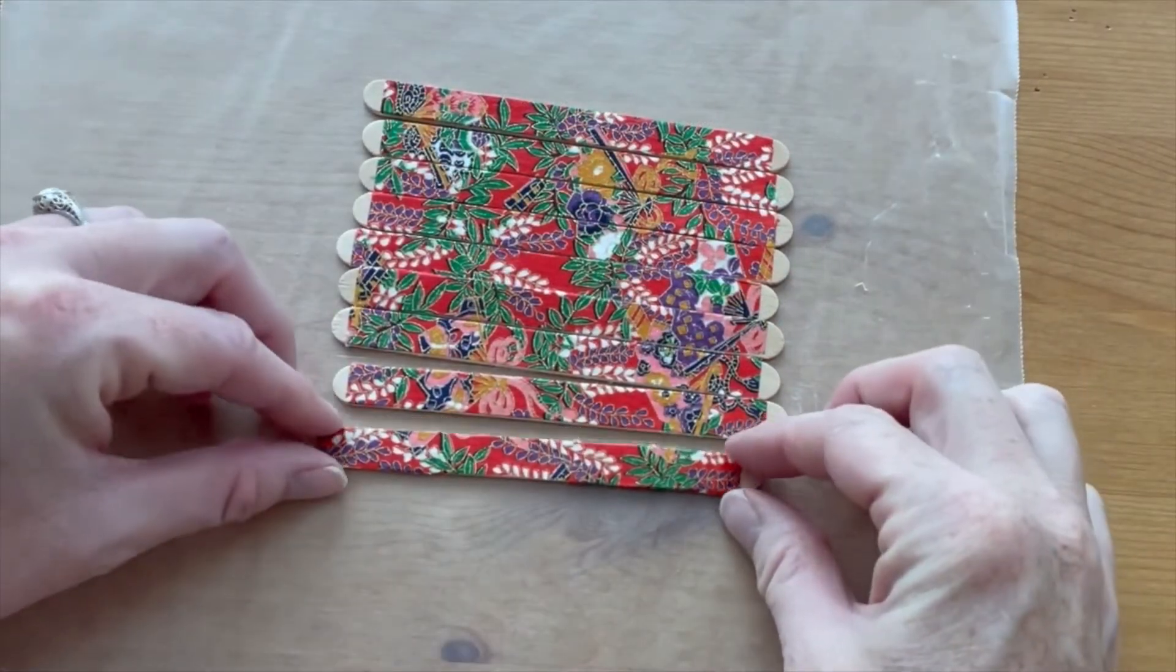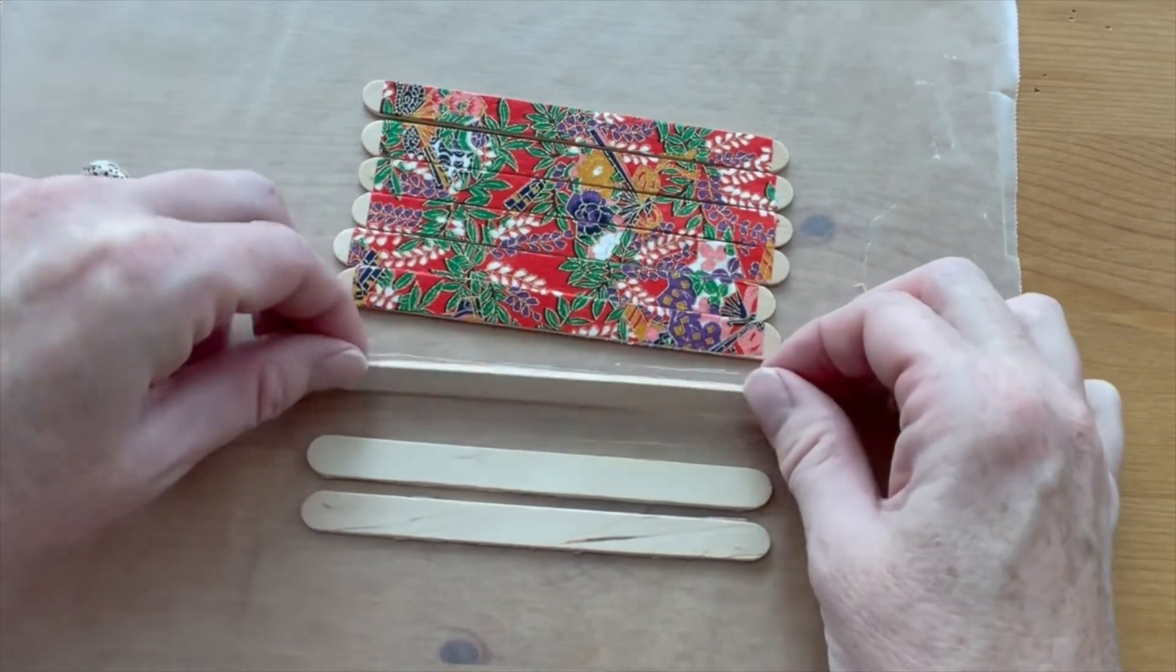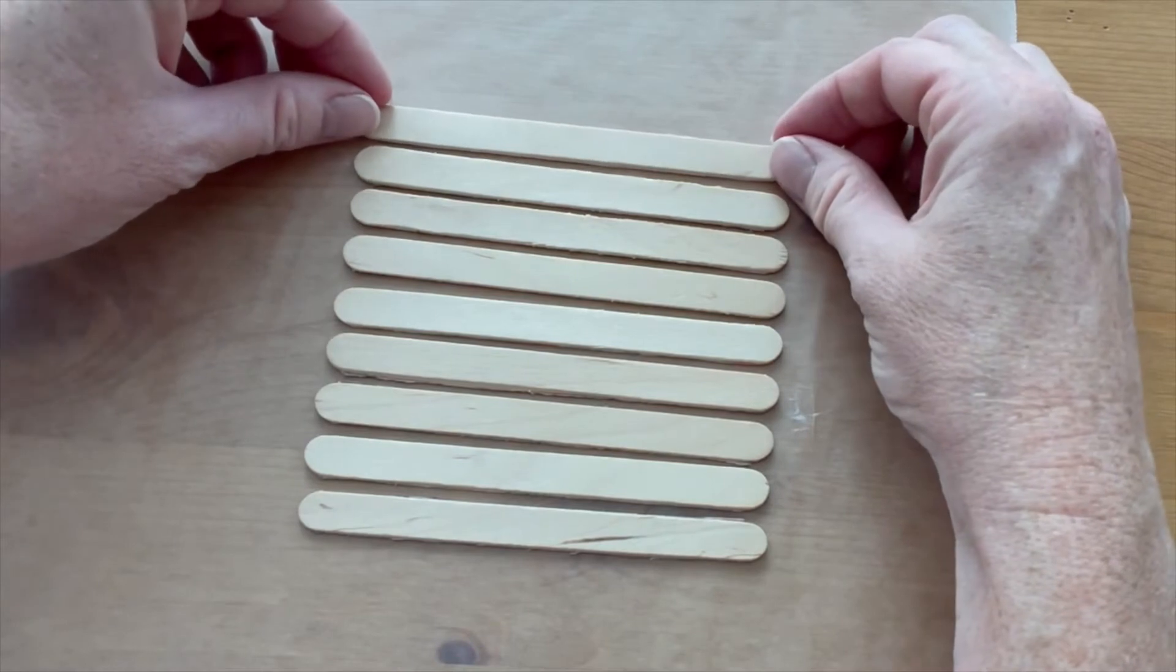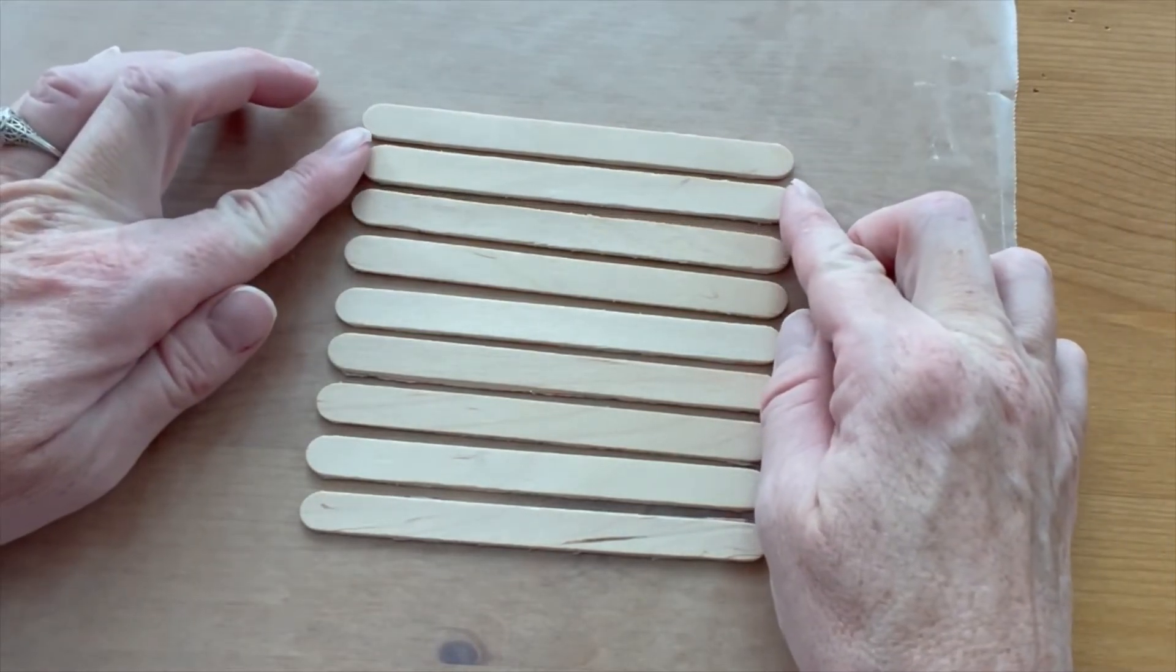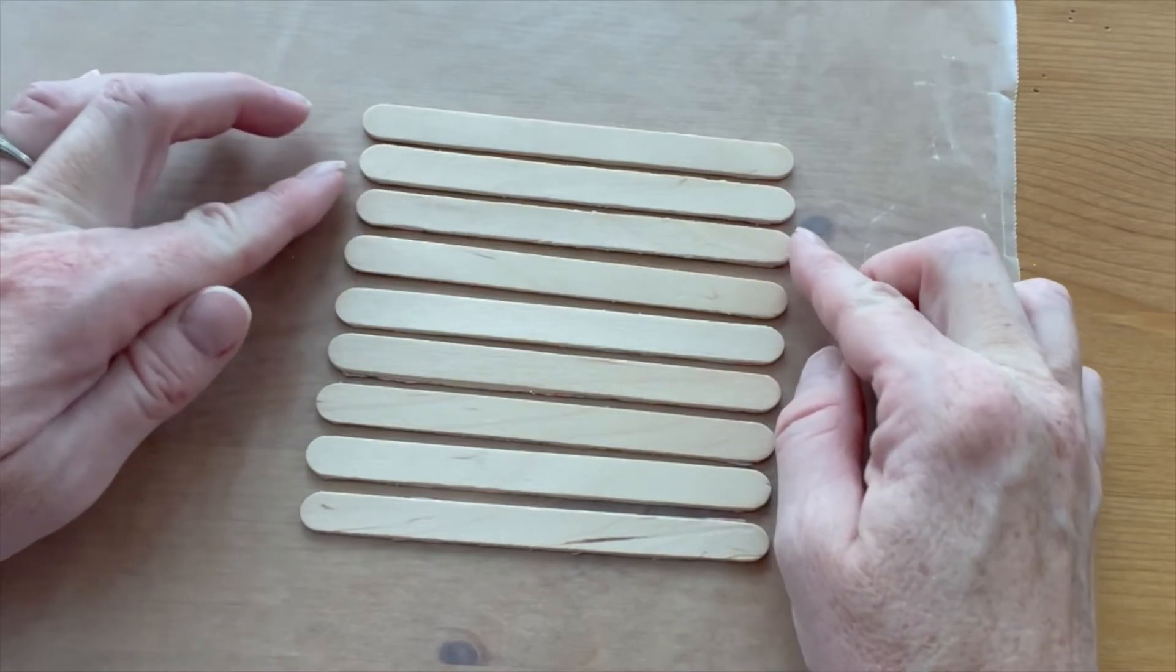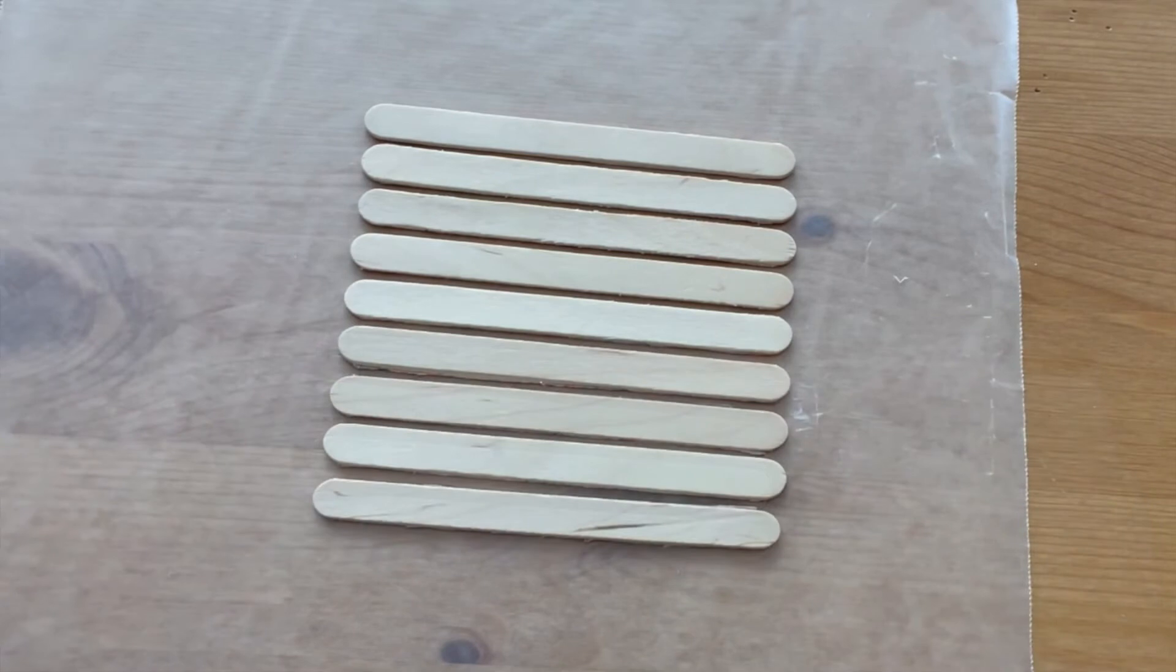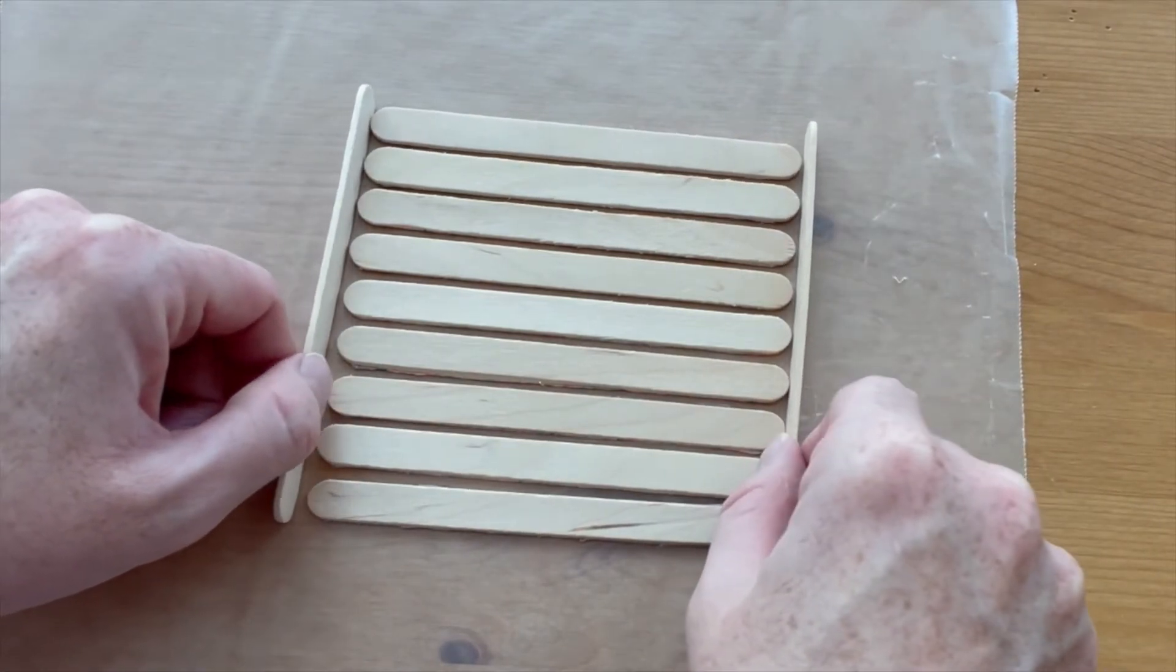Flip the sticks over to the wrong side, but be sure and keep them in the correct order as you flip them. You want to arrange them so that there's just a little gap in between each stick. You want to keep the sticks even on each side and evenly spaced. Take your time with this. You can use a couple extra sticks to help you even out the sides.